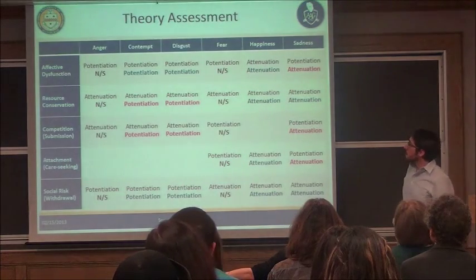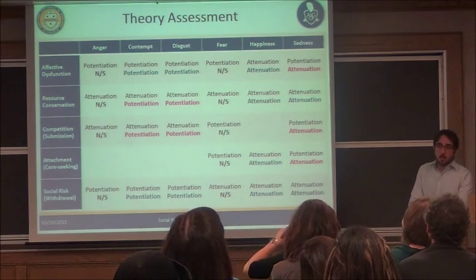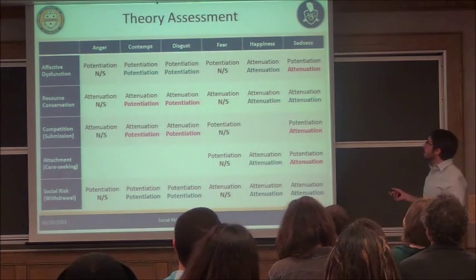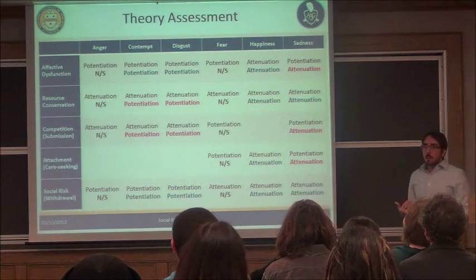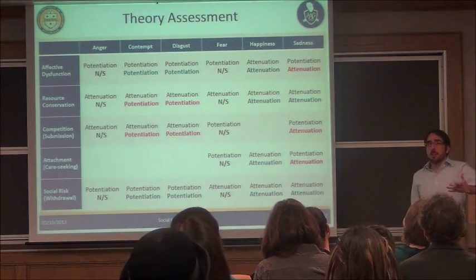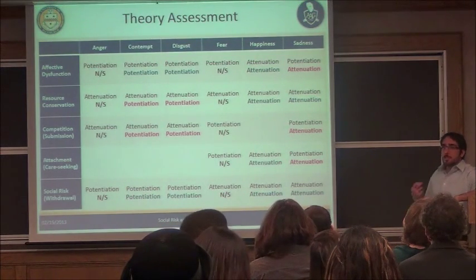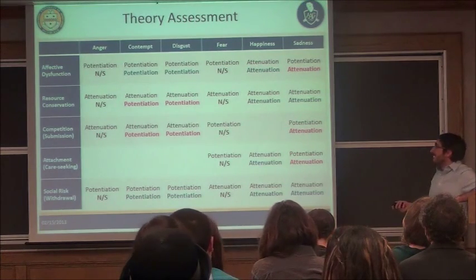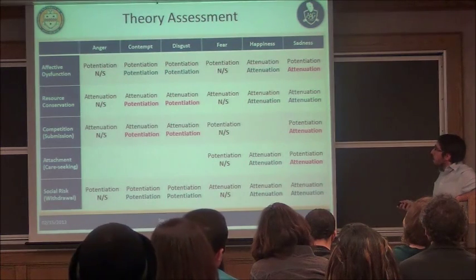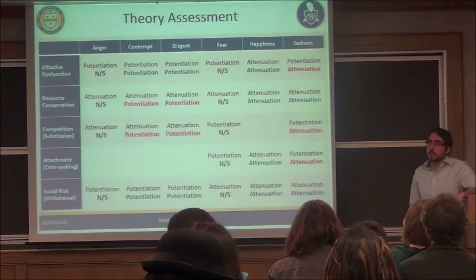Returning to the theories as promised, the blue entries show predictions that aligned with what we found, and red entries show where the reverse of what was predicted was found. A lot of these theories are doing somewhat well — making some accurate predictions — but there's also quite a bit of red, especially towards the top. The only theory with no incorrect predictions is the social risk hypothesis, which explains why the paper is titled 'Social Risk and Depression.'